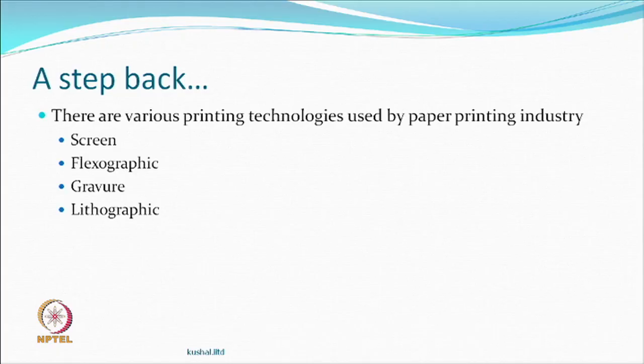We continue from where we stopped. We were looking at transfer printing, what kind of paper should be used for transfer printing, and what are the methods used for printing the paper. Screen printing is one method. For textiles, flexography, gravure, and lithographic methods are specifically designed for paper, and the concept of four-color printing is now popular.